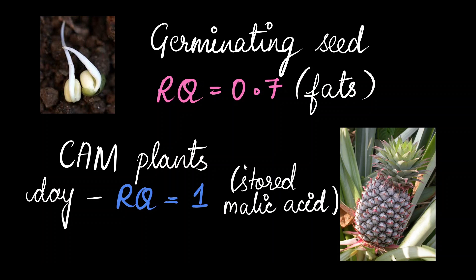But during the night time, the CAM plants primarily fix the carbon dioxide, but they don't release any carbon dioxide during the process. But they continue to consume oxygen. So, what happens here is that it results in the RQ value of 0.